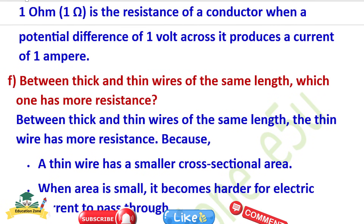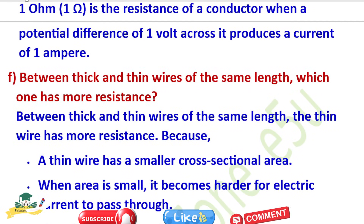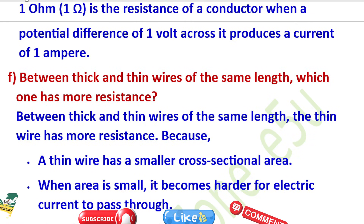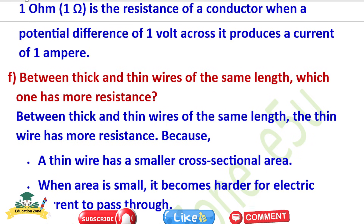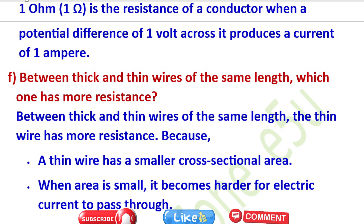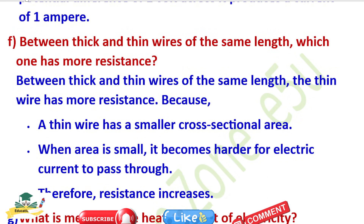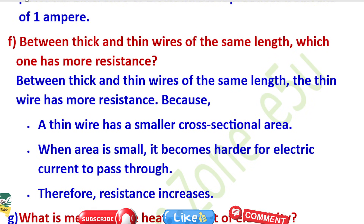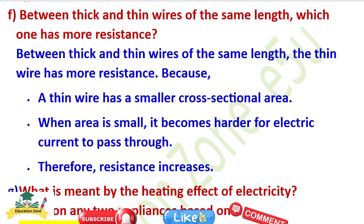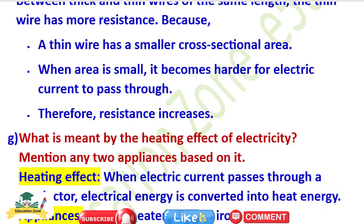Question F: Between thick and thin wires of the same length, which one has more resistance? The thin wire has more resistance because a thin wire has a smaller cross-sectional area, and when the area is small it becomes harder for electric current to pass through, therefore resistance increases.